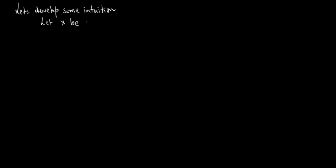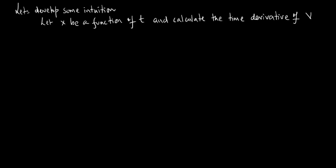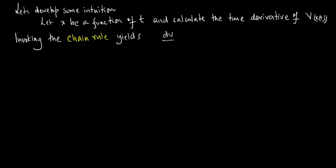Let us develop some intuition. Let x be a function of t and calculate the time derivative of V as a function of x of t. Invoking the chain rule from calculus yields dV dt equals dV dx times dx dt.